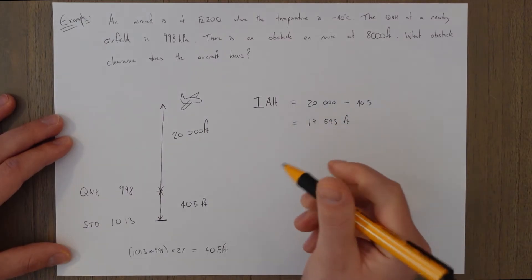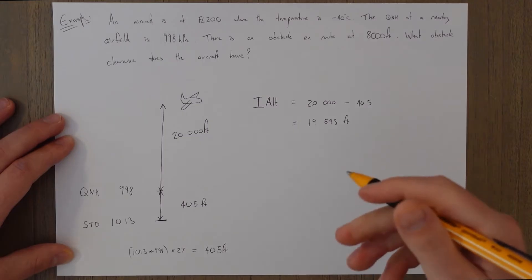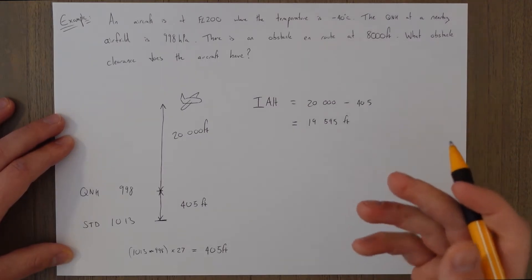So that's our indicated altitude. We apply temperature corrections to this to get our true altitude. So we have to figure out the ISA deviation.